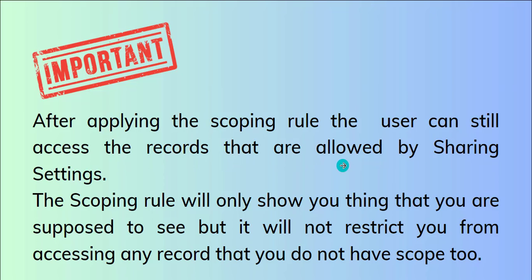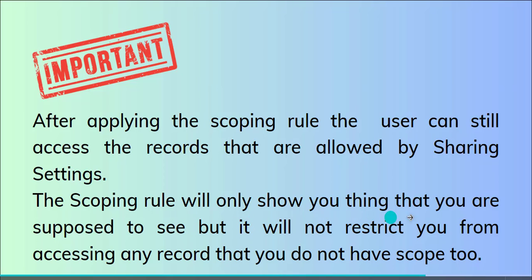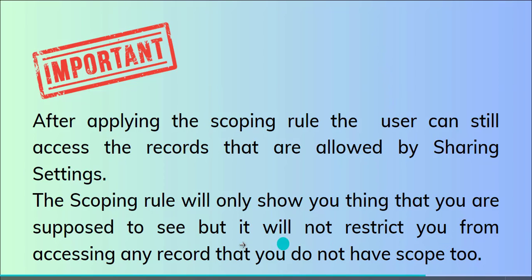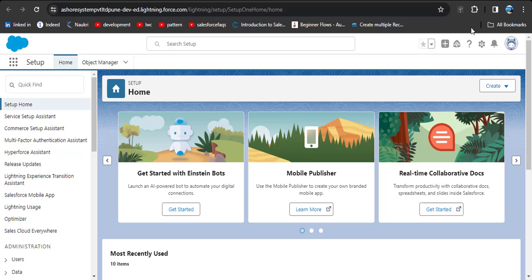Here is an important thing: after applying the scoping rule, the user can still access the records that are allowed by sharing settings. The scoping rule will not show you things you are not supposed to see, but it will not restrict you from accessing records that your sharing settings allow.